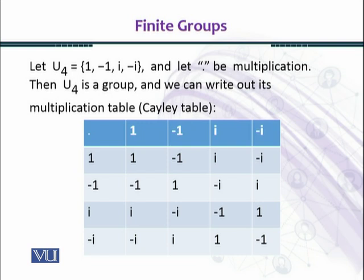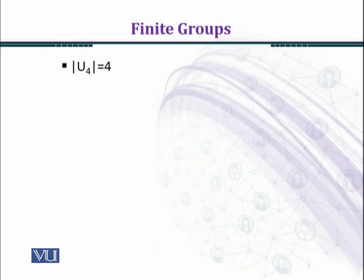Multiplication is the binary operation. U4 is a group — the associative property holds in complex numbers and therefore also holds in U4, which is a subset of the complex numbers. So U4 under multiplication is a group. The order of U4 is 4, as there are 4 elements in U4.